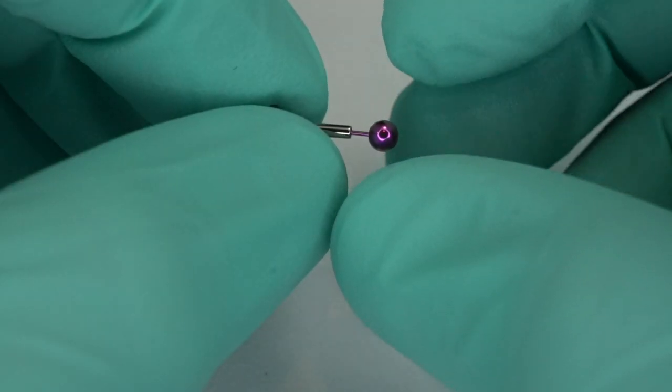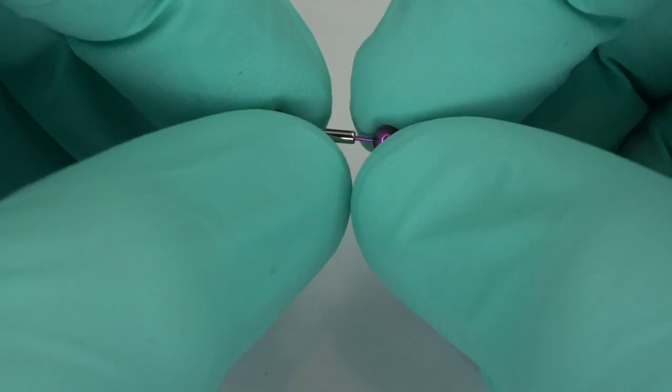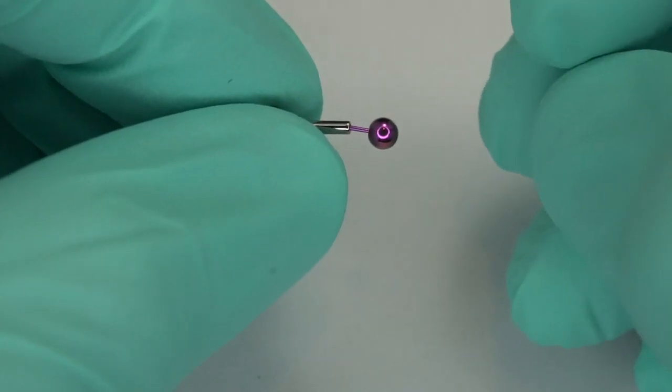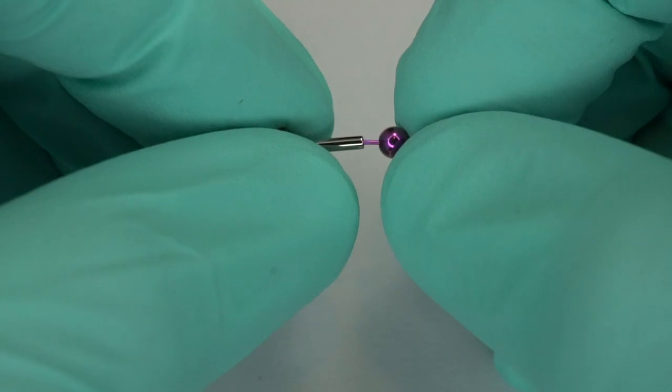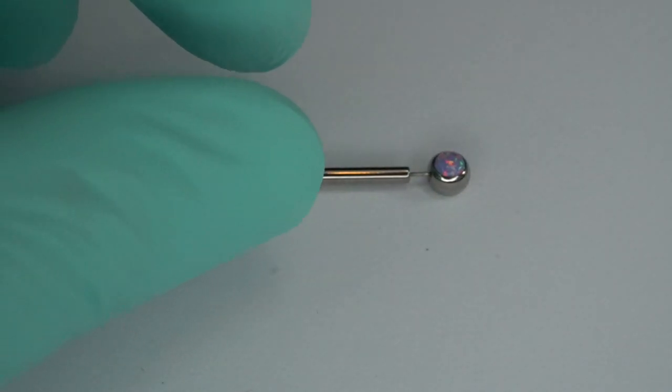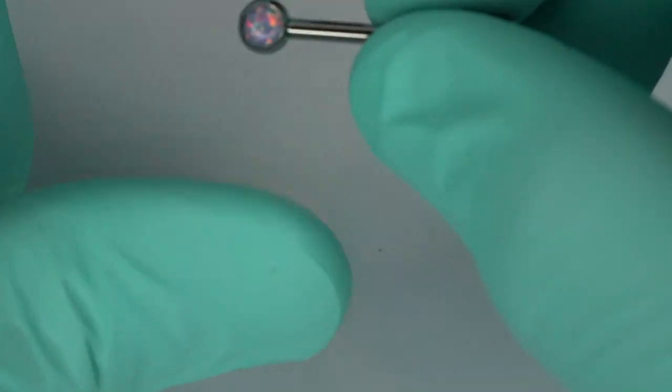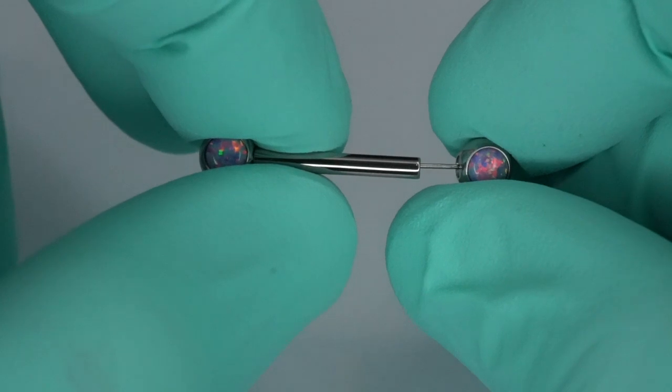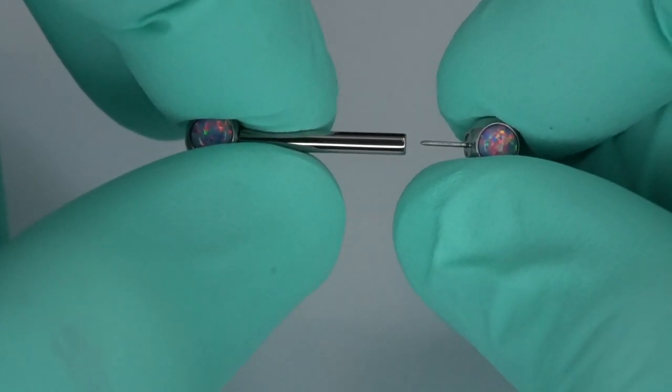The way the end fits securely inside the post is by tension caused by a very subtle bend in the threadless pin. If you have a brand new threadless piece you need to bend for security, you can actually use the post to achieve the right fit. I recommend doing this in a clean area of your home, away from drains or dense carpeting that your jewelry can get lost in if you happen to drop it.